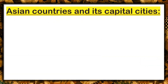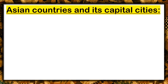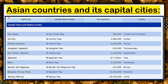So class, these are different Asian countries and their capital cities. We have Abu Dhabi — United Arab Emirates; Amman — Jordan; Ankara — Turkey; Ashgabat — Turkmenistan; Nur Sultan — Kazakhstan; Baghdad — Iraq; Baku — Azerbaijan; Bandar Seri Begawan — Brunei; Bangkok — Thailand; Beijing — China.